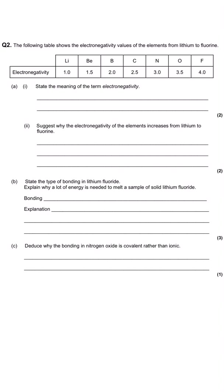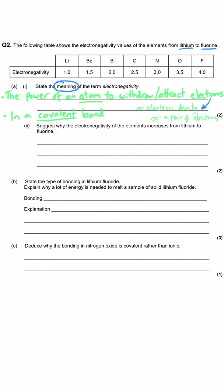In this second question we've been given a table of data showing electronegativity data from lithium through to fluorine, across period two. We've been asked to explain the meaning of the term electronegativity and we've got two marks. It's that second mark that people often miss out. Electronegativity is defined as the power of an atom to withdraw electrons from a covalent bond or in a covalent bond, and it's that covalent bond that's the crucial second mark.